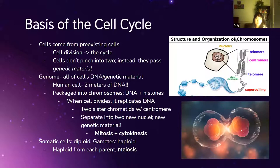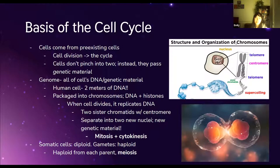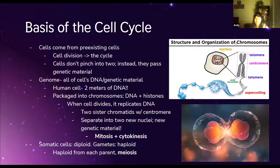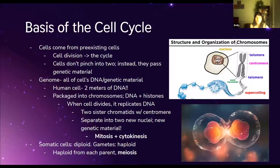When a cell divides, it's not actually just pinching in half. Instead it copies its DNA, and then this DNA separates into two nuclei. The process of one cell copying its genetic material and chromosomes to form two new nuclei is called mitosis, and then the actual physical formation of two cells is cytokinesis.